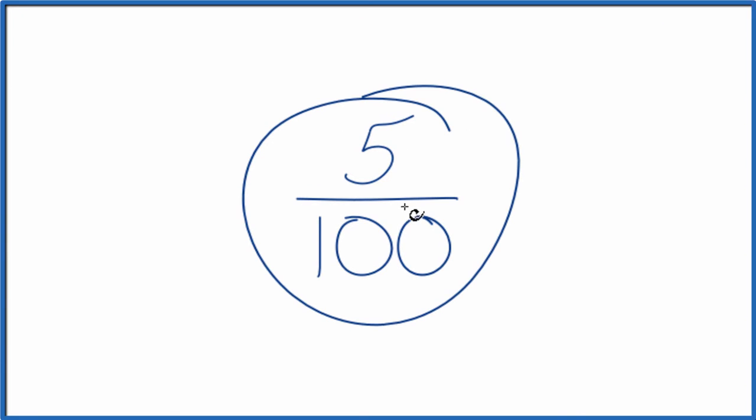Let's write the fraction 5 over 100 as a decimal. And there's two ways you could do this.